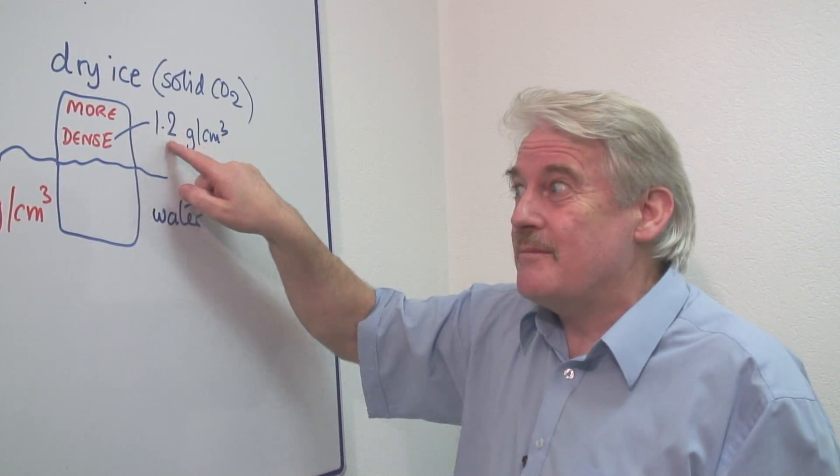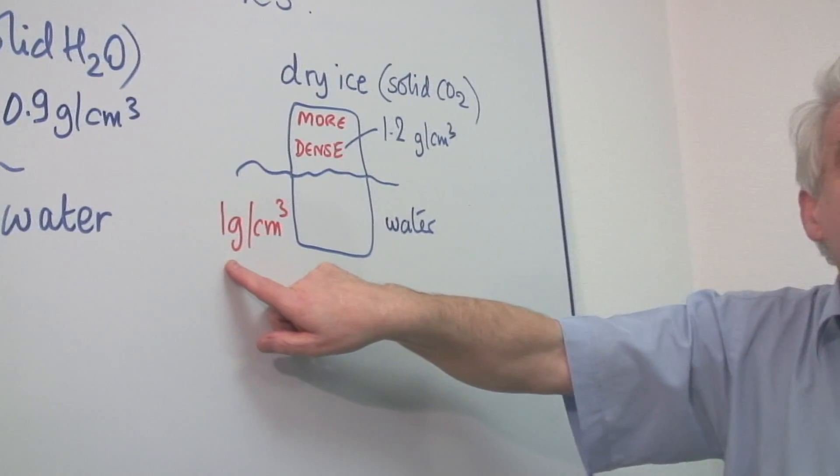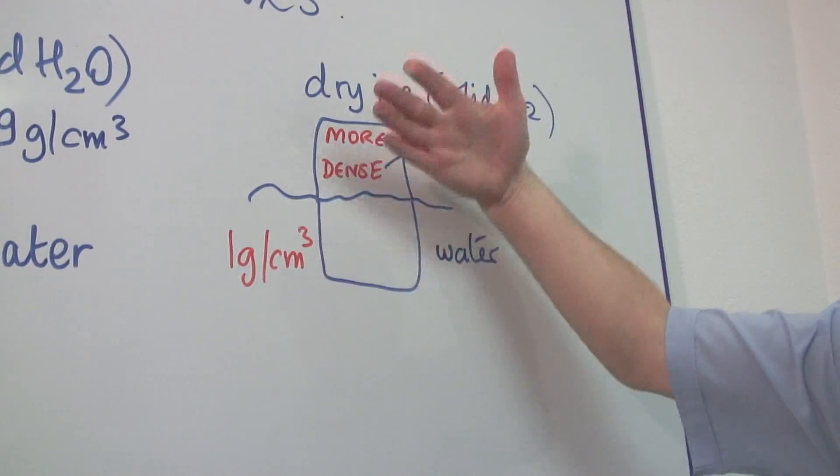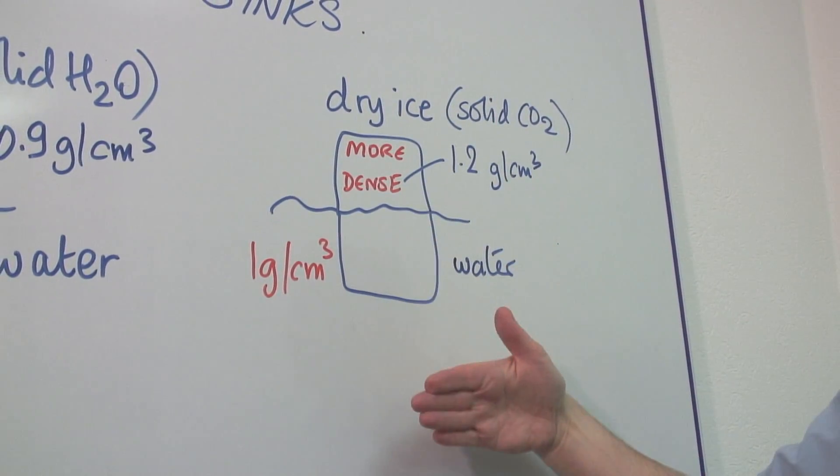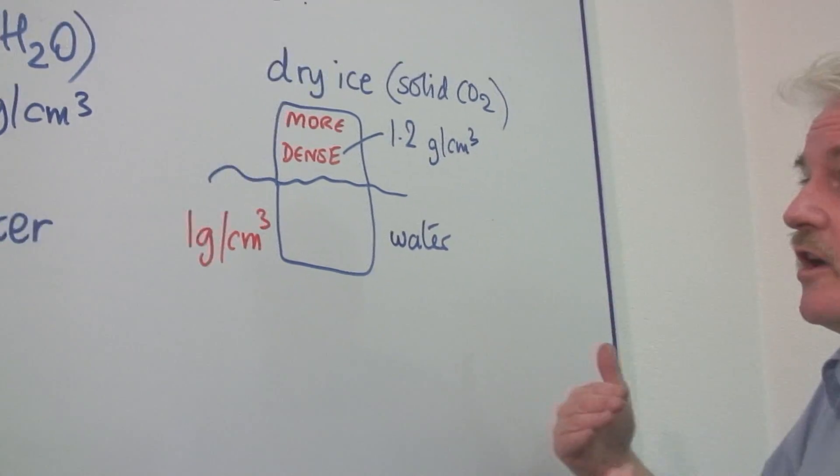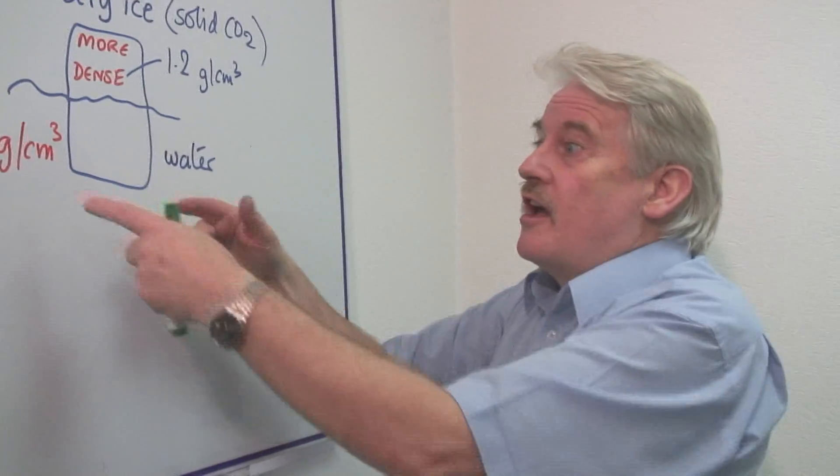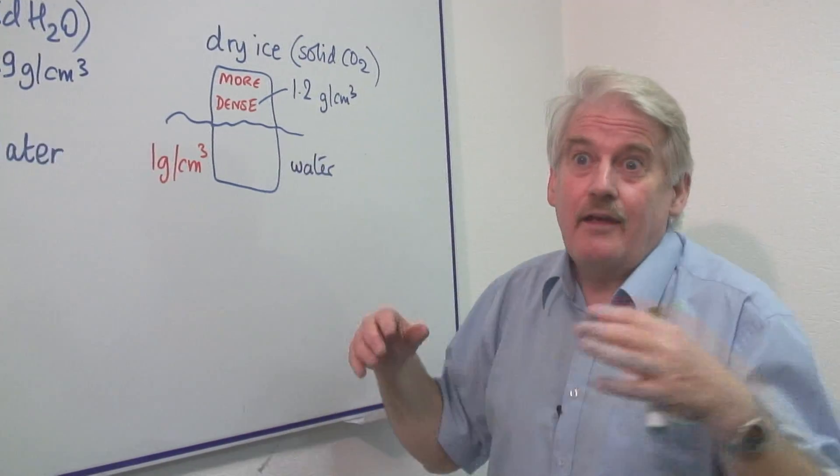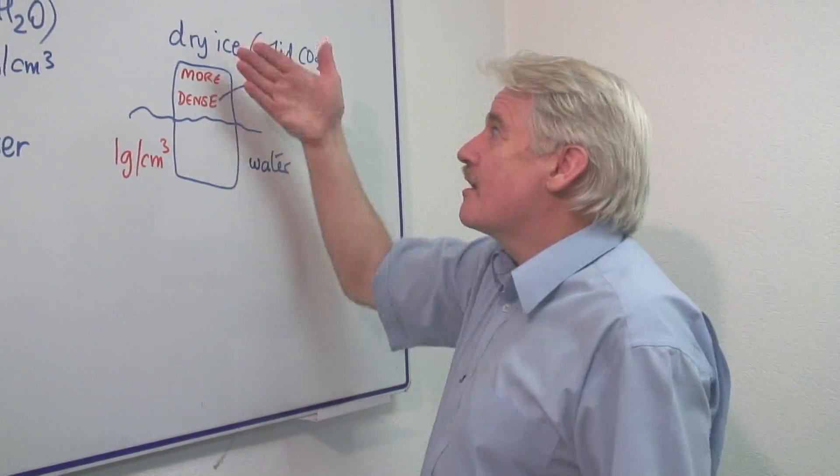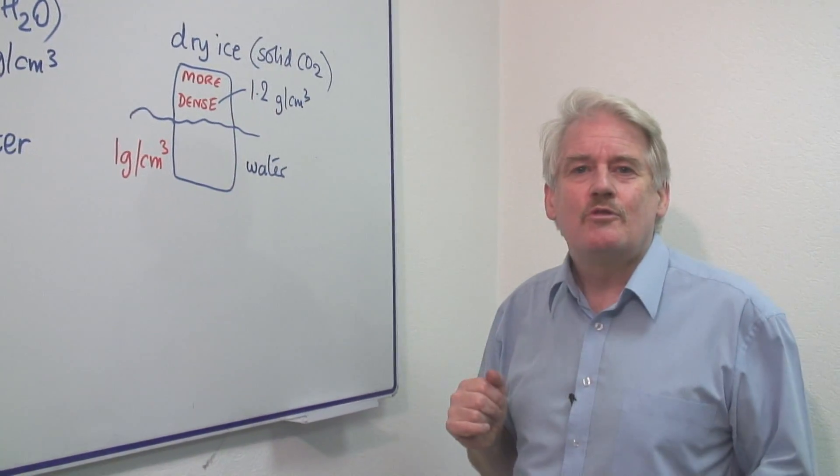Now 1.2 grams is greater than the 1 gram that the water would weigh and therefore it would sink. It pushes down against the water. The water can push upwards, up to an amount of 1 gram's worth, and then it has to give up because the dry ice can continue to push.